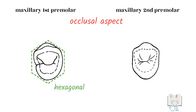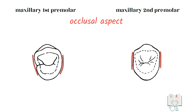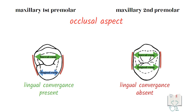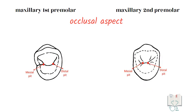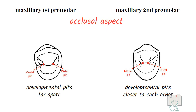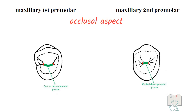Finally, the occlusal aspect. The outline form of the first premolar is hexagonal, whereas in the second premolar it is more of an oval shape. The lingual convergence seen in the first premolar — because of the smaller lingual cusp — is not seen in the second premolar, as both cusps are equal in size. The mesial and distal pits are present in both premolars, but in the second premolar they are closer to each other. As a result, the central developmental groove running between the two pits in the second premolar is shorter than in the first premolar.